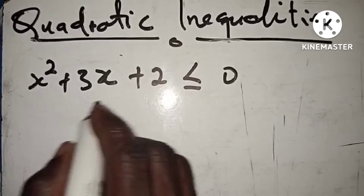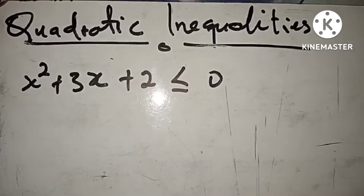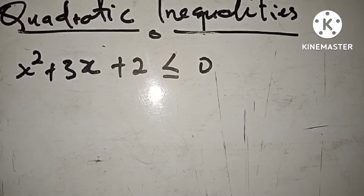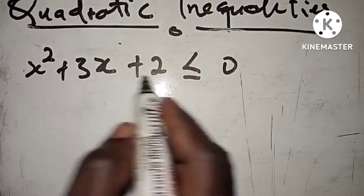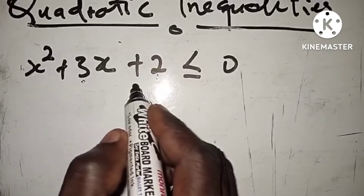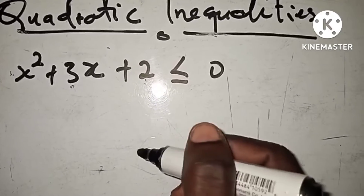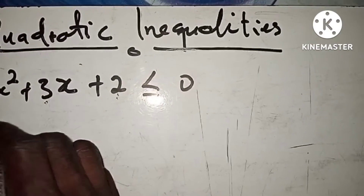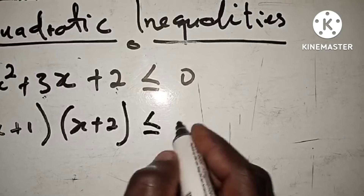To solve this quadratic, you can use the factorization method, completing the square, or the quadratic formula. Here we use factorization. You find a, b, and c — in this case a is 1, b is 3, and c is 2. After factorizing, you get two factors: (x + 1) and (x + 2). If you don't know how I got this, comment below.